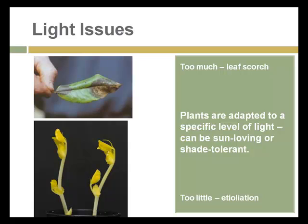Too much light can be problematic: plants adapted to grow in full or partial shade can get too much light and show a symptom called leaf scorch, when they are burned by too much sunlight. On the other hand, plants that are shaded show symptoms of etiolation — yellowing and stretching of internodes as plants try to reach for more light to increase photosynthesis. Plants are adapted to a specific level of light; some are sun-loving and want full sun all the time, while others are shade-tolerant and can even be injured by direct sunlight.